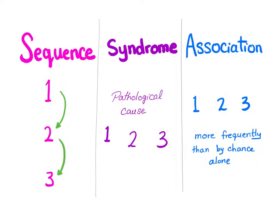Sequence is a condition where there is a chain of events: event number one leads to number two, which leads to number three. For example, Potter syndrome has renal agenesis, which leads to oligohydramnios, which leads to lung hypoplasia — there is a sequence. There is a video for Potter sequence and the link is in the description.